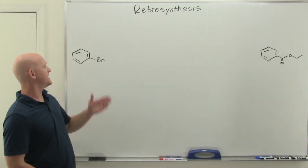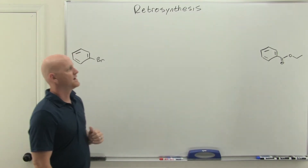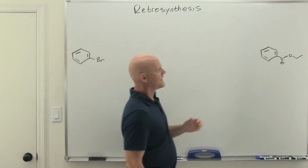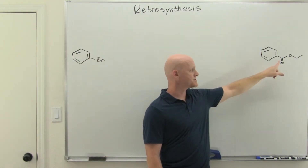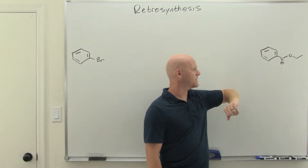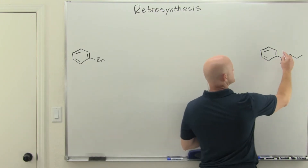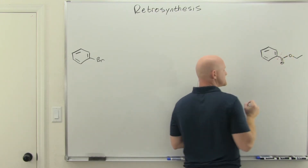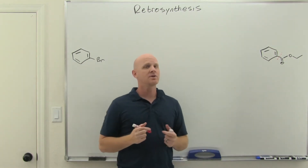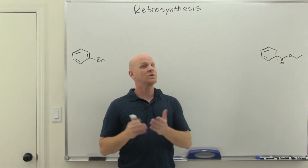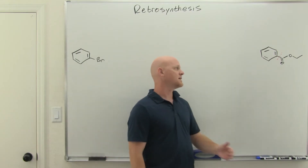In this example, we've got a phenyl bromide — a benzene ring with an aryl halide — and we're coming up with an ester as our functional group, which is our carboxylic acid derivative. Obviously we're going to have to make this carbon-carbon bond somewhere along the way, and the most common ways we've learned to make carbon-carbon bonds have been with organometallics like a Grignard reaction.